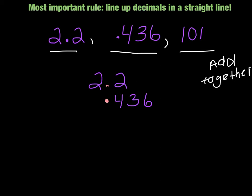Next thing I'm going to write in my number 101. Notice that there's no decimal point in this one, but it is a whole number. And the thing we know about whole numbers is that there's always a decimal point to the right of the ones place, even though it might not be written there.